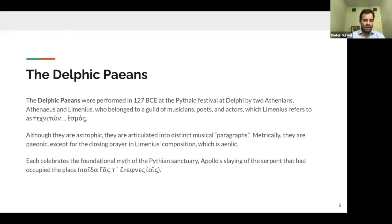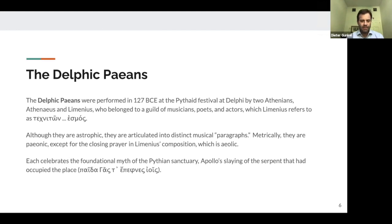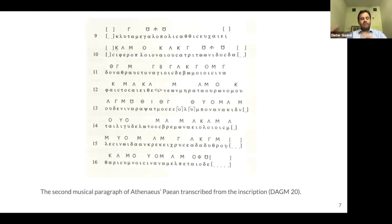Each of them celebrates, as was of course traditional, the foundational myth of the Pythian sanctuary — Apollo's slaying of the serpent that had occupied the place. Here's just a quote from Limenios's paean: 'Pitagos tephneis iois' — you slew the son of earth with your arrows. This is the second musical paragraph of Athenaios's paean, which was sung and accompanied by both the aulos and the kithara.